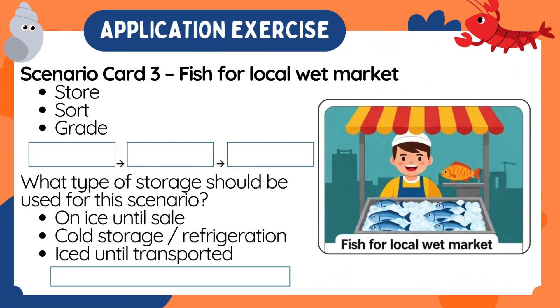Scenario card 3: Fish for local wet market. Steps: store, sort, grade. What type of storage should be used? Choices: On ice until sale, cold storage, refrigeration, or iced until transported.